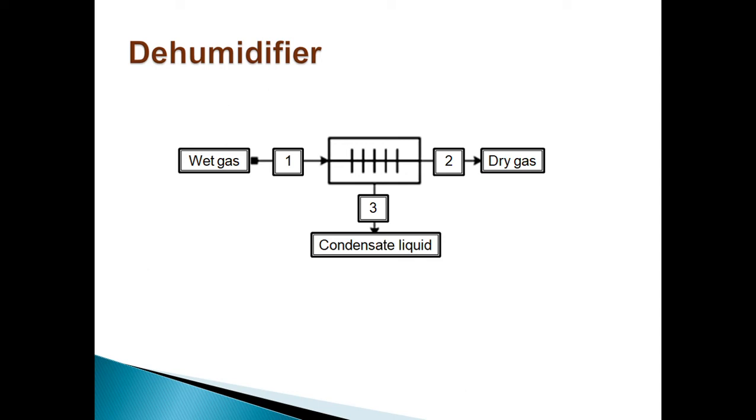In dehumidification, feed stream contains a condensable and a non-condensable component whereas the condensate is a liquid with the condensable component only, such as water in air.